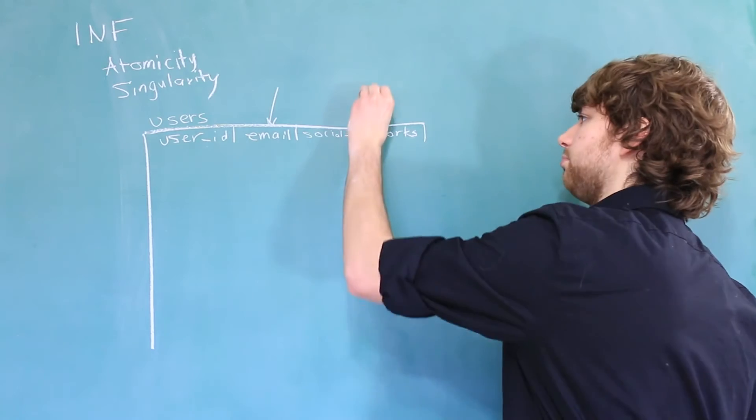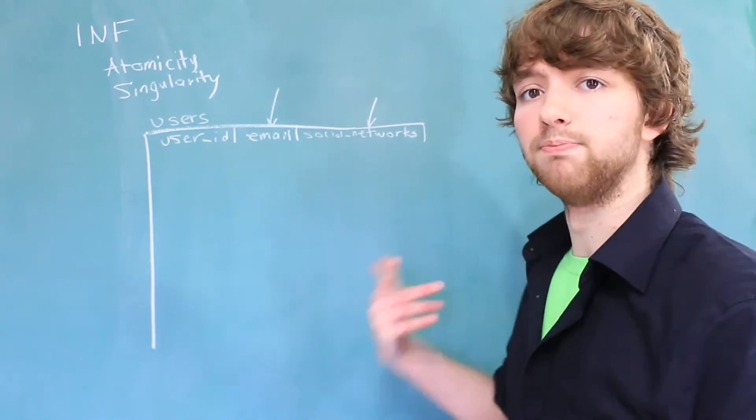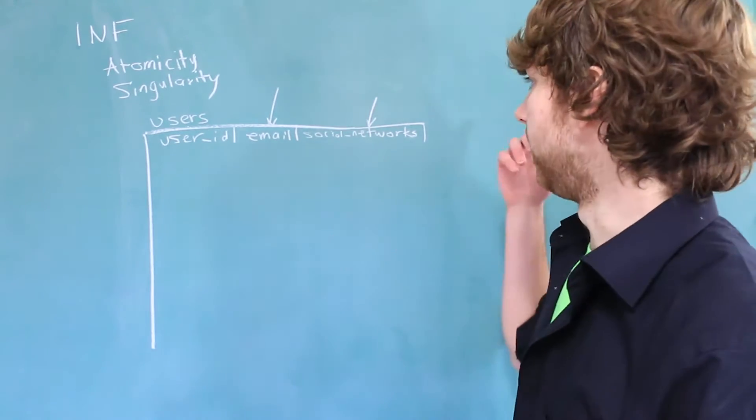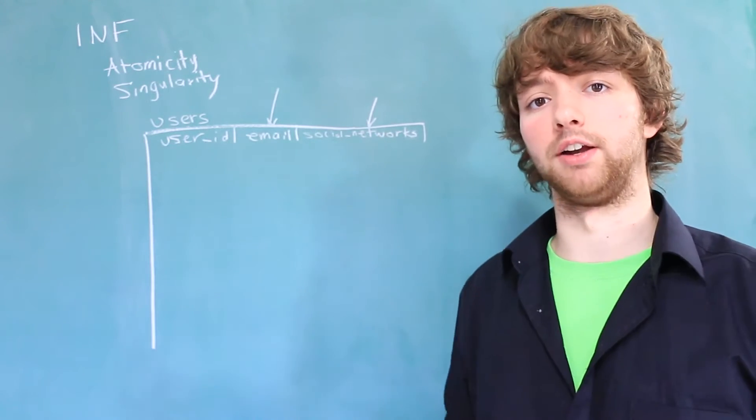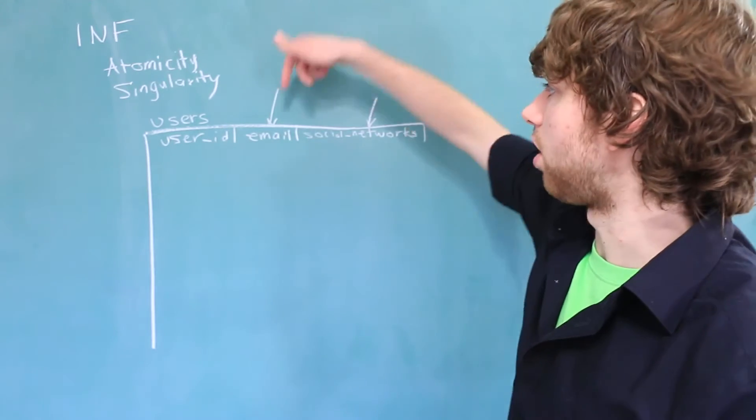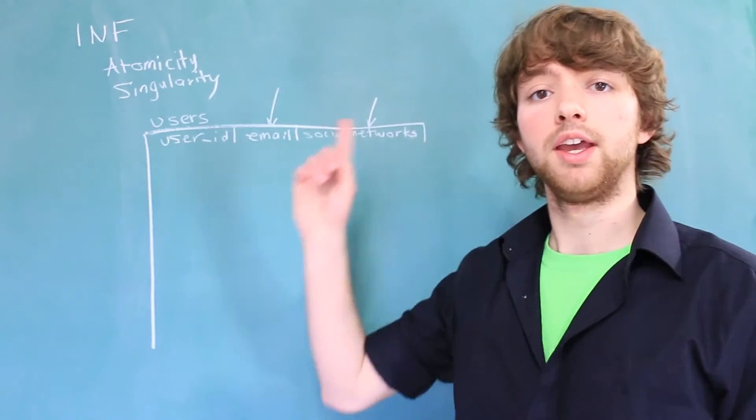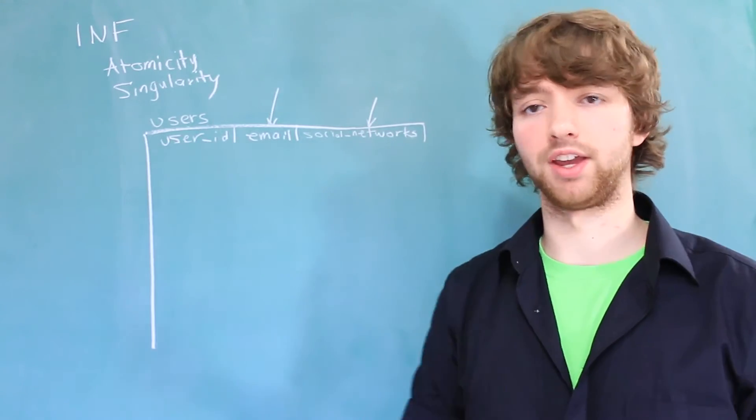This is breaking the rules because this implies that you're allowed to put multiple social networks in one row, which you're not. That's also breaking the rules of singularity. So each column has to describe one thing, and it has to describe only one of that one thing.